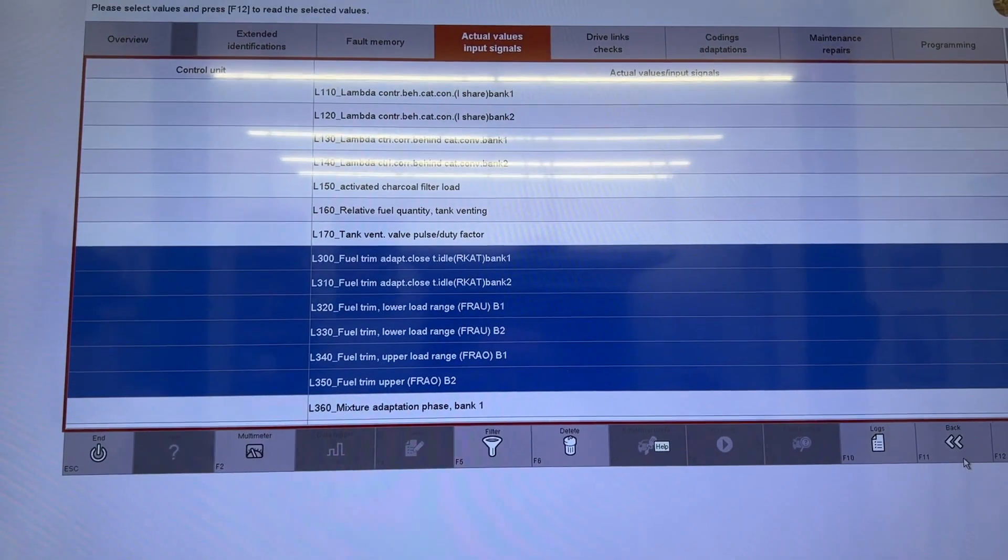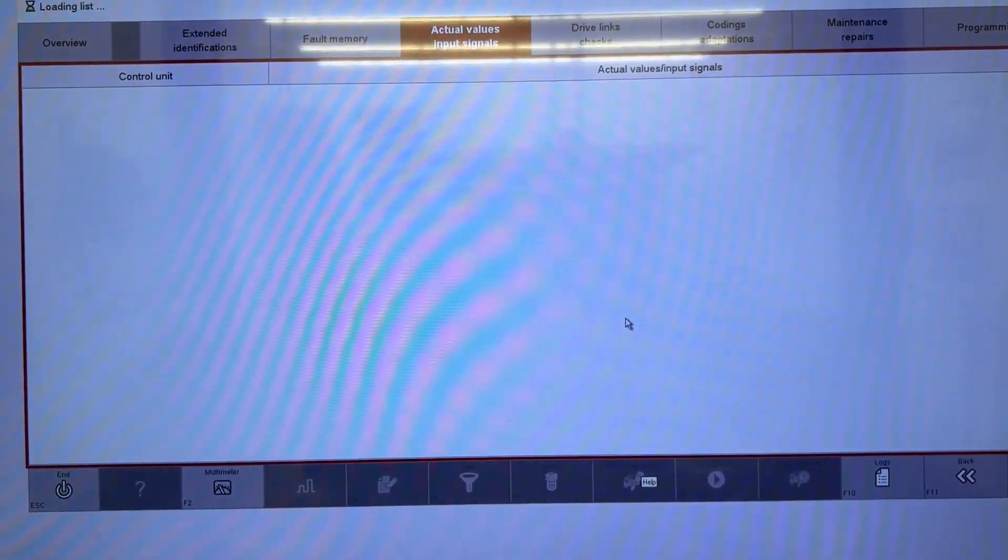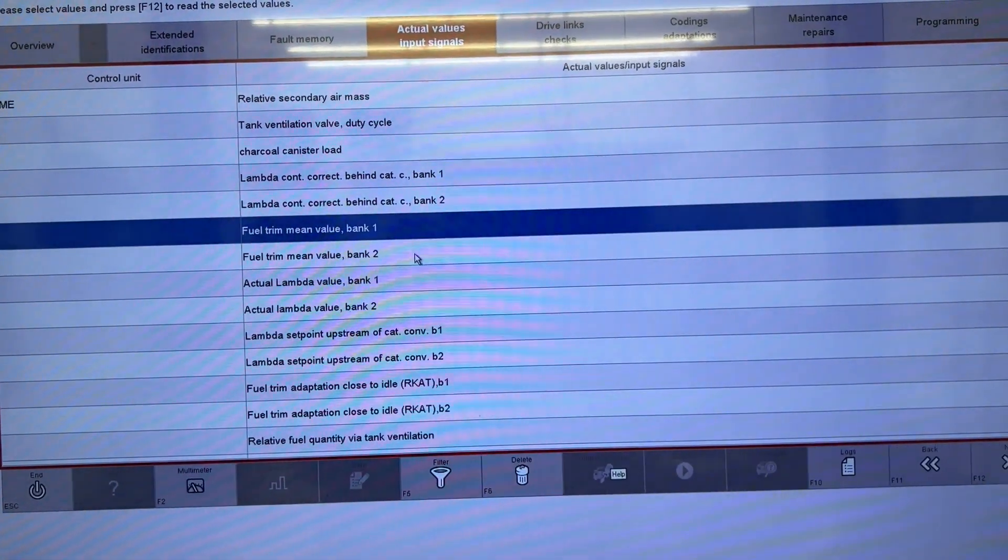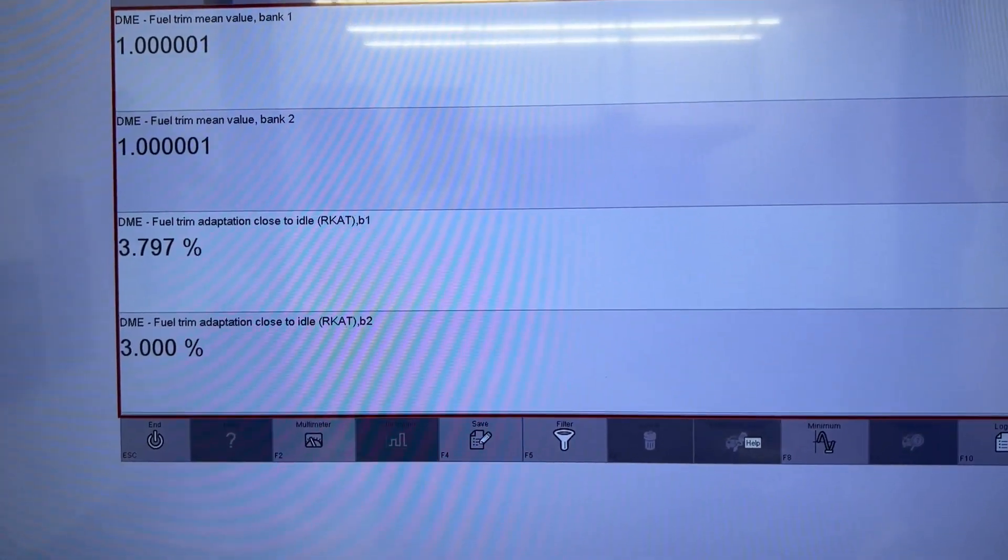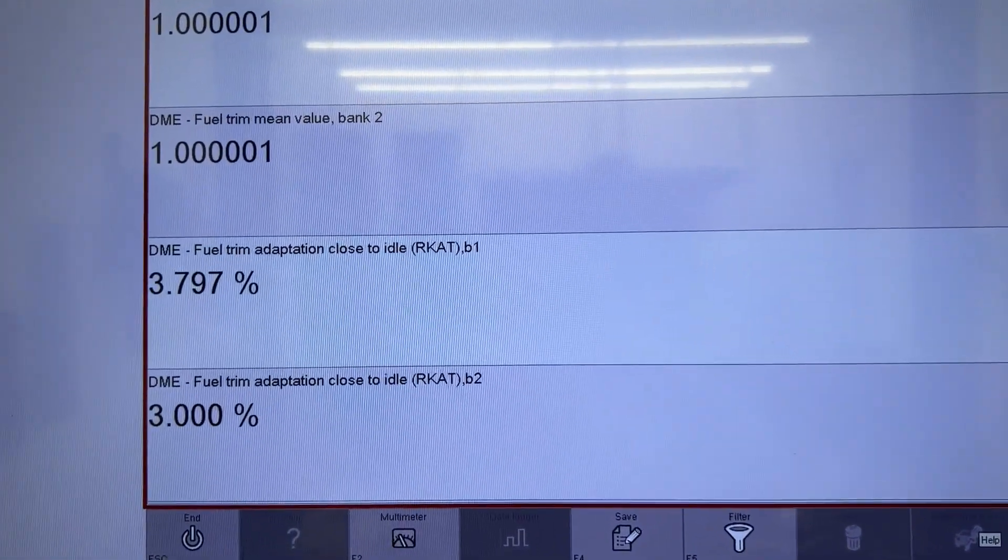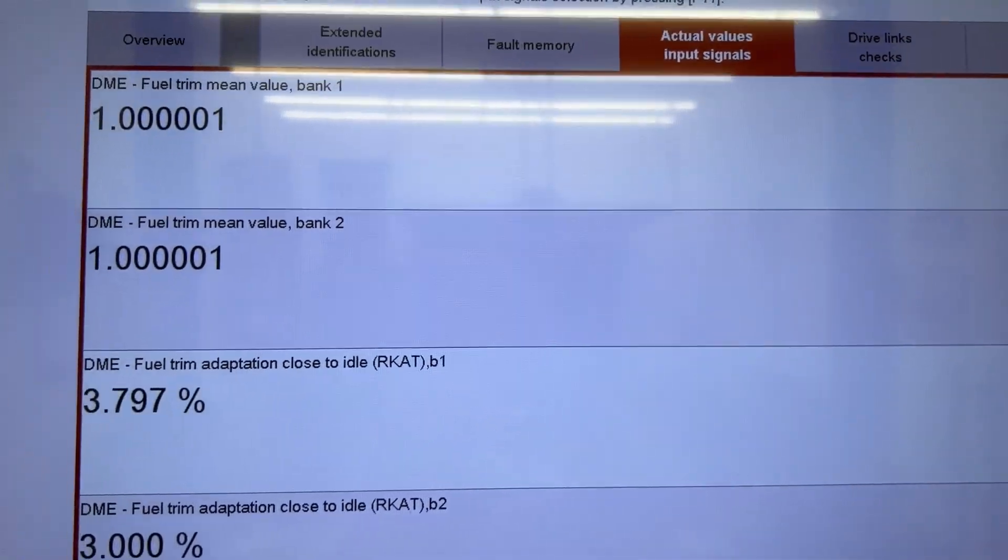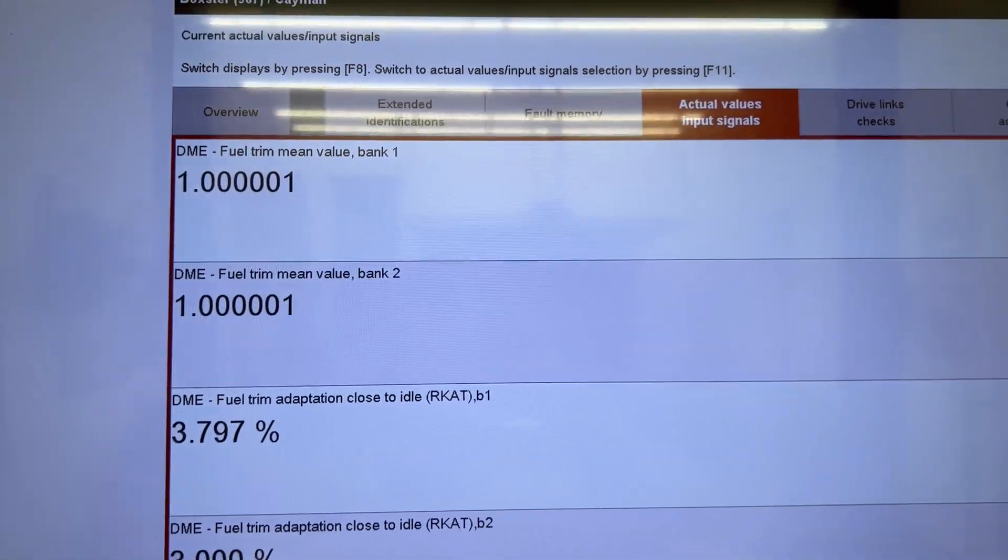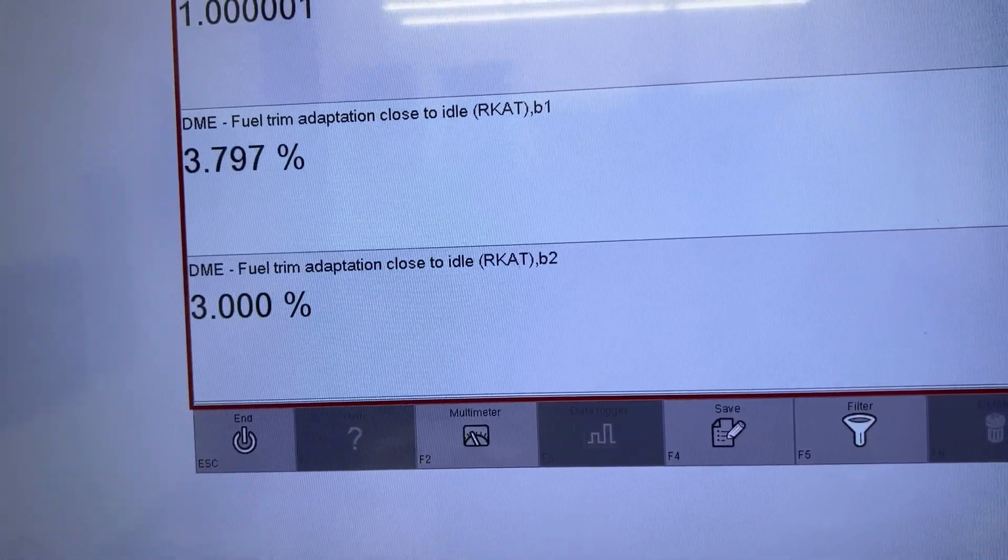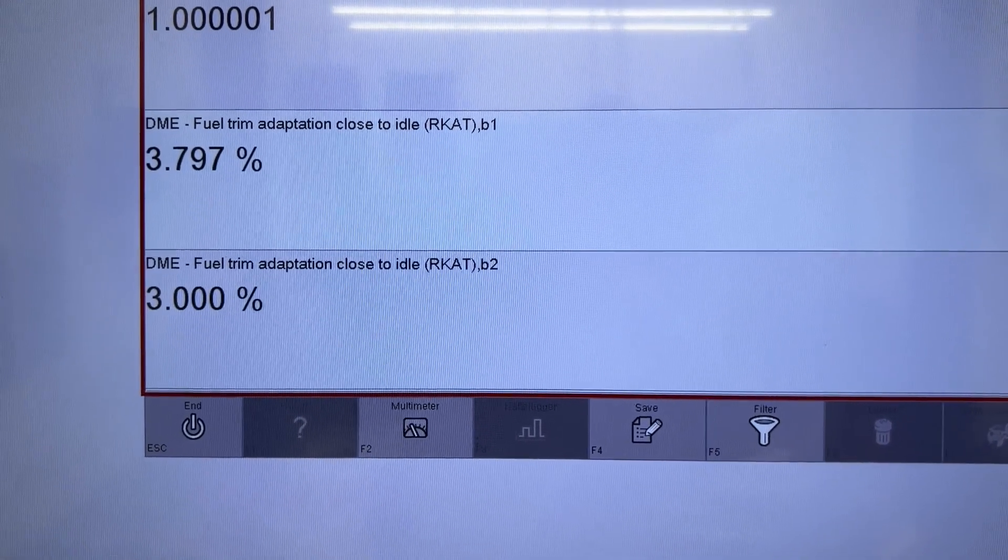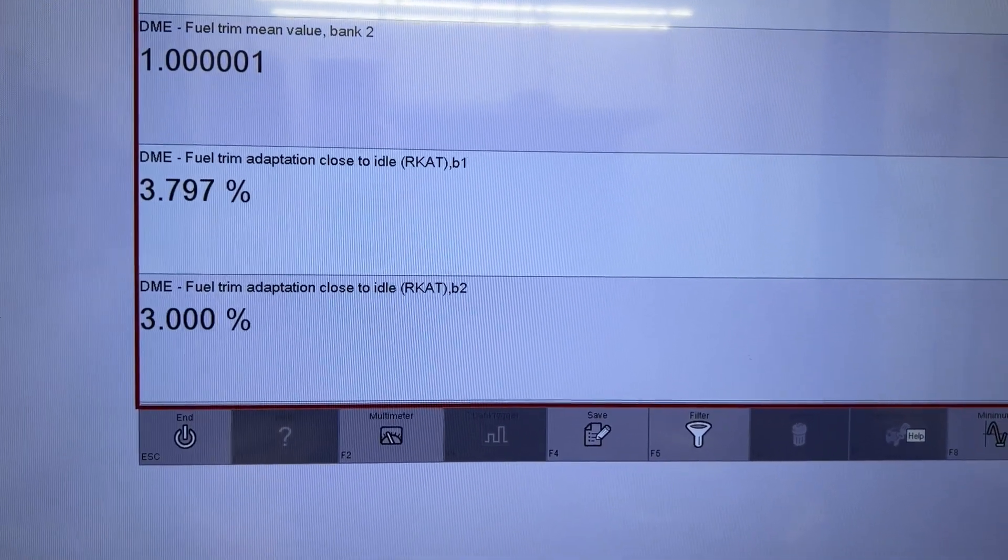Let me disconnect and reconnect the P-Wiz. Now that it knows I'm a Cayman, we're back to our familiar values. Here's fuel trim and RCAT. All right, so just as expected, our RCAT values are stored in here and our fuel trim is reset. So next time I start it up, it's going to know that it needs 3.797% more fuel to be mixed to run smoothly for bank one and 3% for bank two.